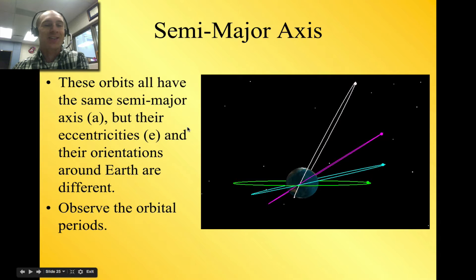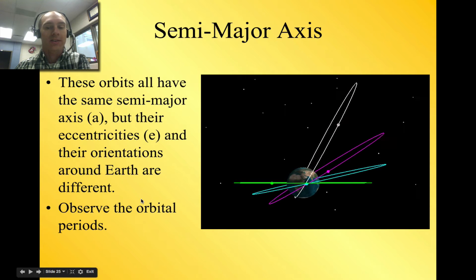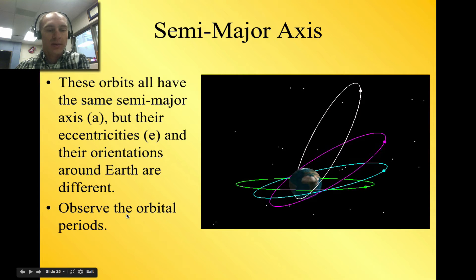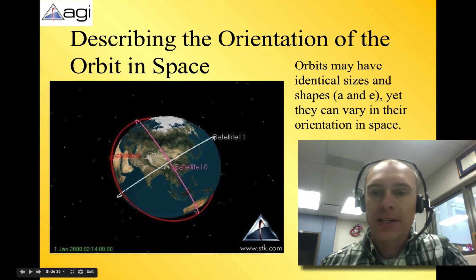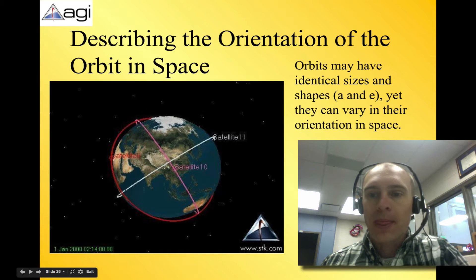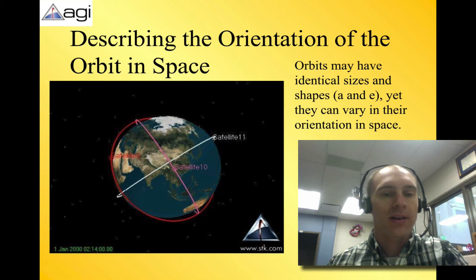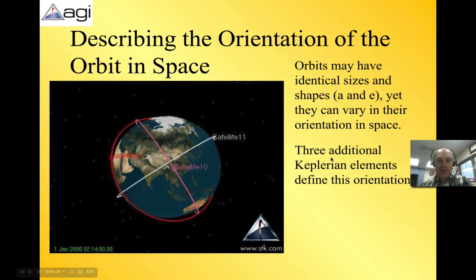All right, I hope you gave that a shot. We are looking right now at all these orbits that have the same semi-major axes, but their eccentricities and their orientations around the Earth are different. So just kind of take a look at this. Observe the orbital periods. You can see that the green one has, again, all have the same semi-major axes, but their eccentricities are different. If one part is the same, that doesn't mean that the orbit is all the same. By changing other factors, you can completely change the way the orbits look. If you were going to describe the orientation of the orbit in space, a lot of them have identical sizes and shapes, but they can vary in their orientation in space. So if you look at these different satellites, they're kind of traveling around the Earth in different orientations.